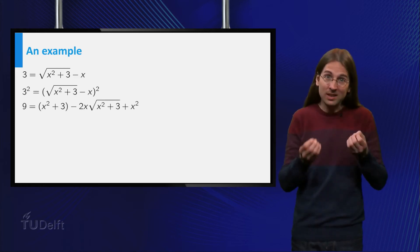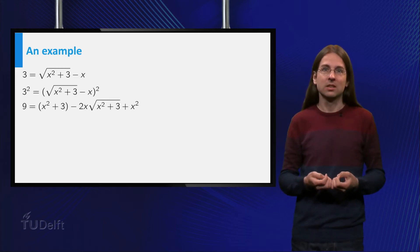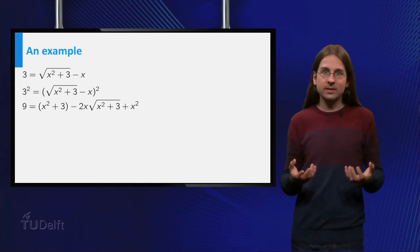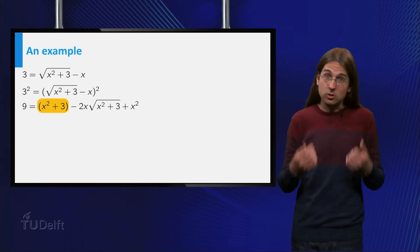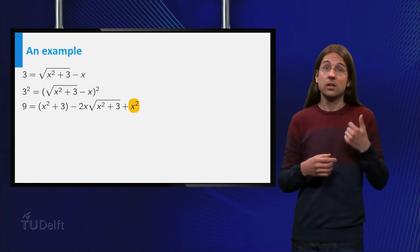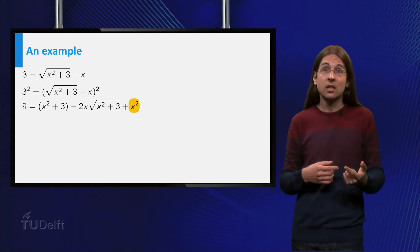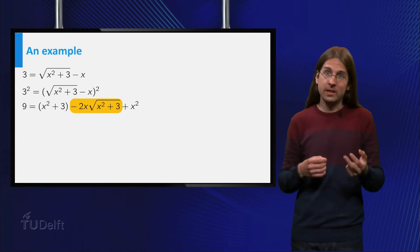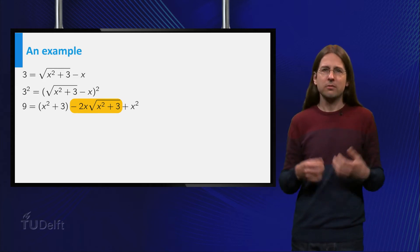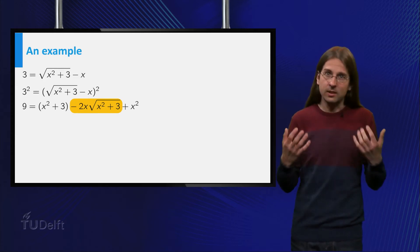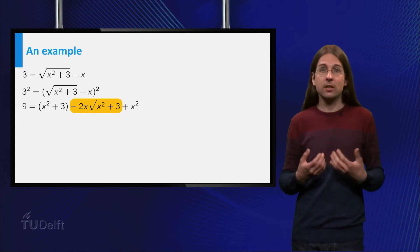Taking the square directly in this equation will not work. The square of the right hand side contains the square of the square root, the square of minus x, but also the product of the square root and minus x. We still have a square root and did not succeed in simplifying the equation.